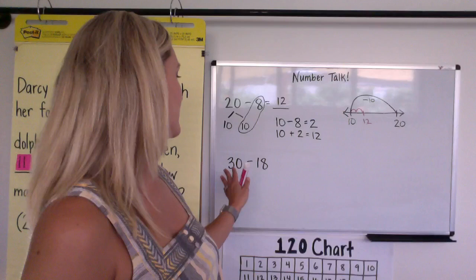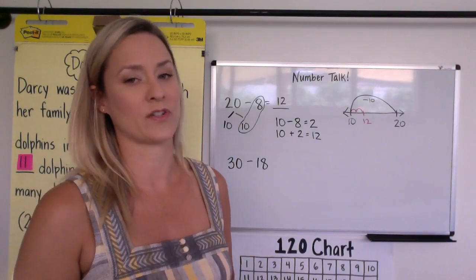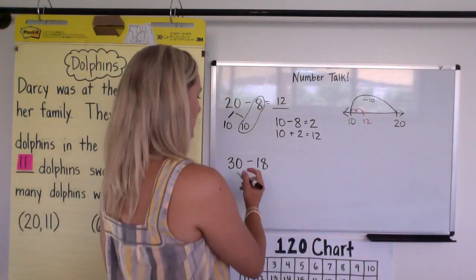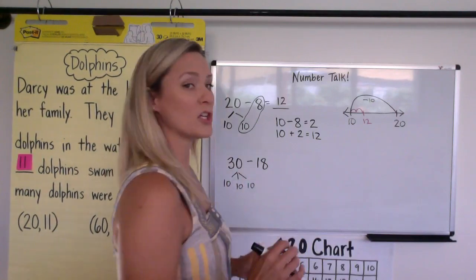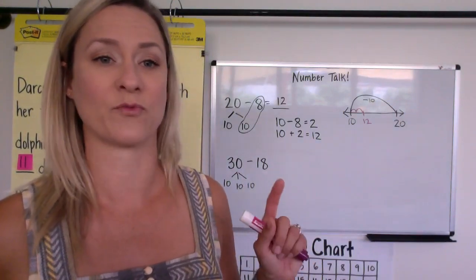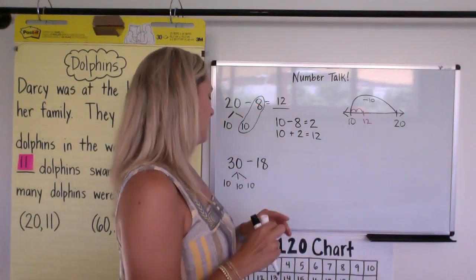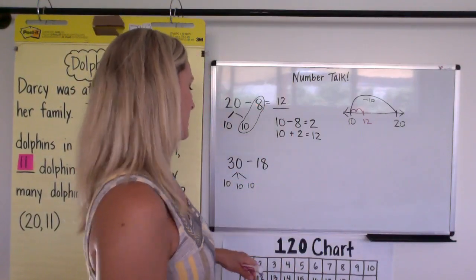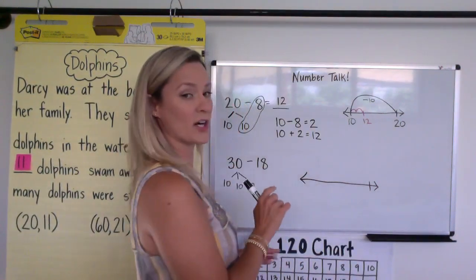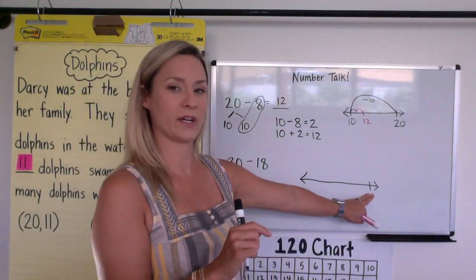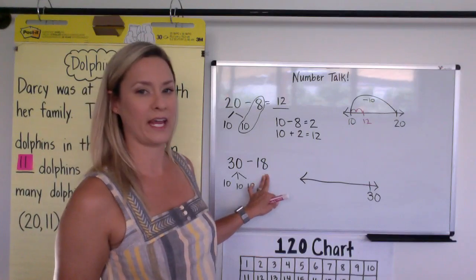The next thing I'm going to ask your child is 30 minus 18, and I would expect to see similar strategies across the board. So maybe they'll separate the 30 into a 10, 10, 10. This is called unitizing. Unitizing is really important that they know how to make units of 10. So maybe they'll do that, or maybe they'll simply do a number line. So again, starting on this side, the very right side, they're going to write 30 and they're going to take off 18.